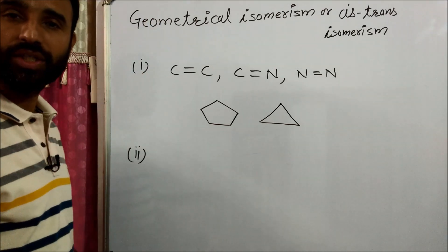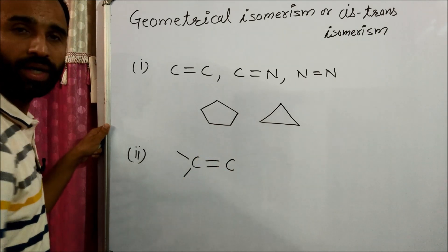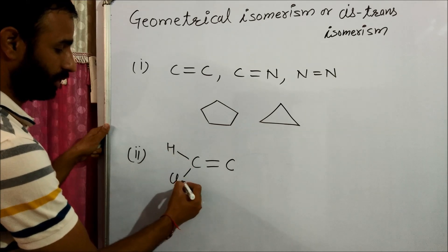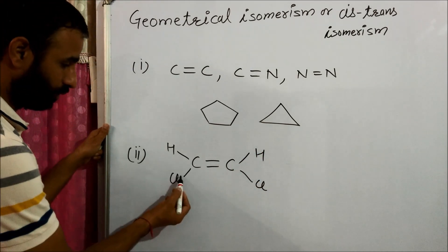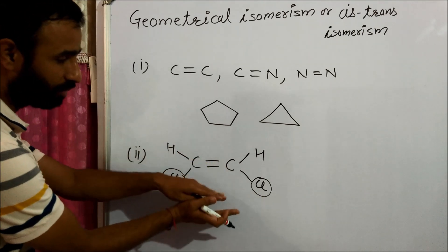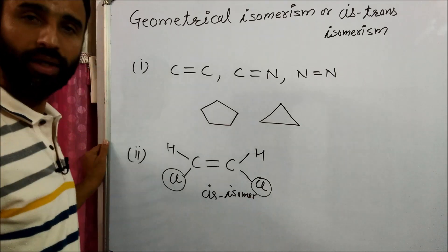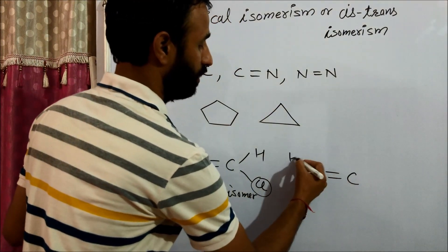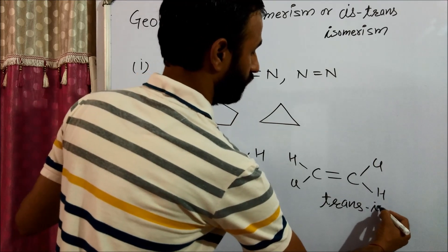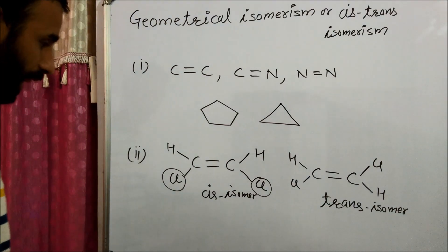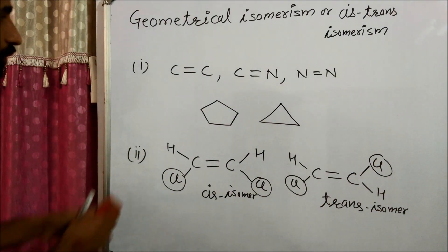The second condition is that the atoms or groups about which rotation is frozen must be different. If the same atoms or groups are on the same side of the double bond, it is called the cis isomer. If they are on opposite sides, it is called the trans isomer. This applies to C=C, C=N, and similar double bonds.